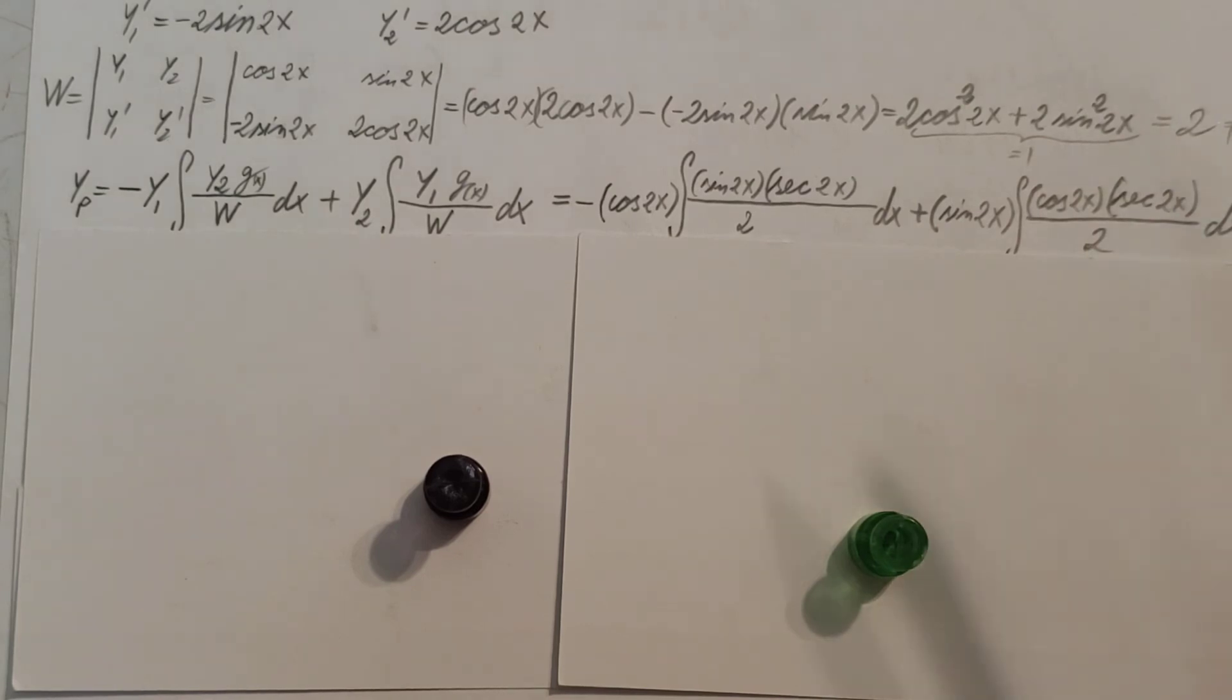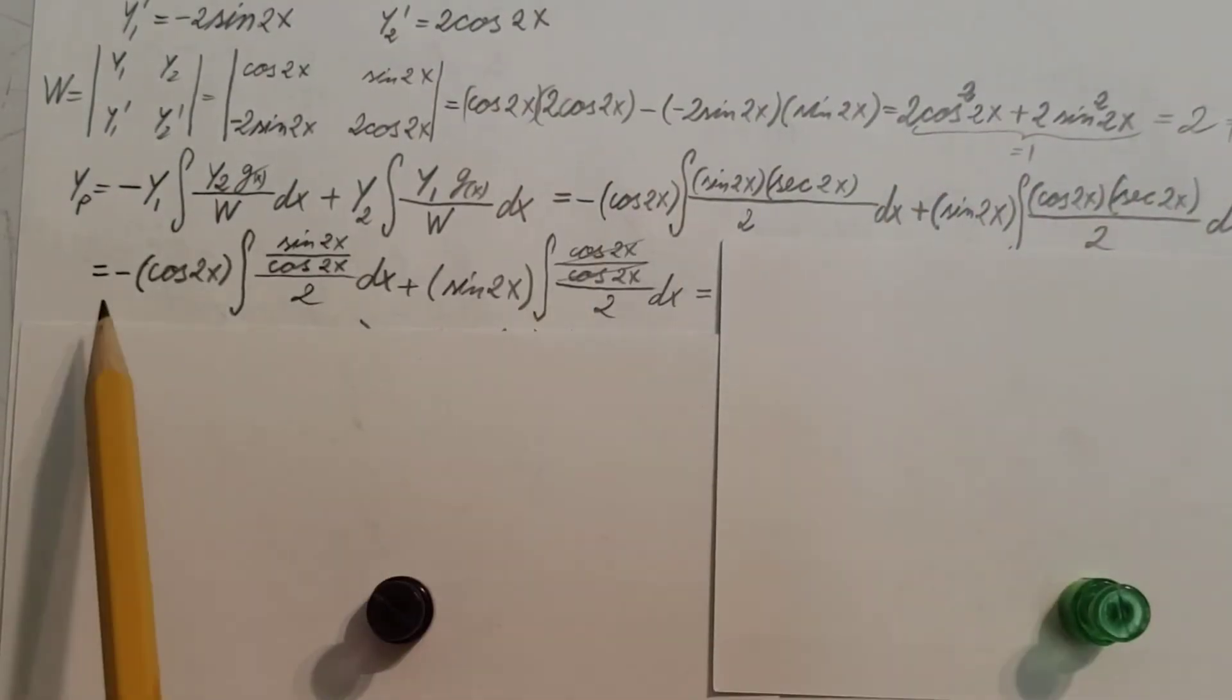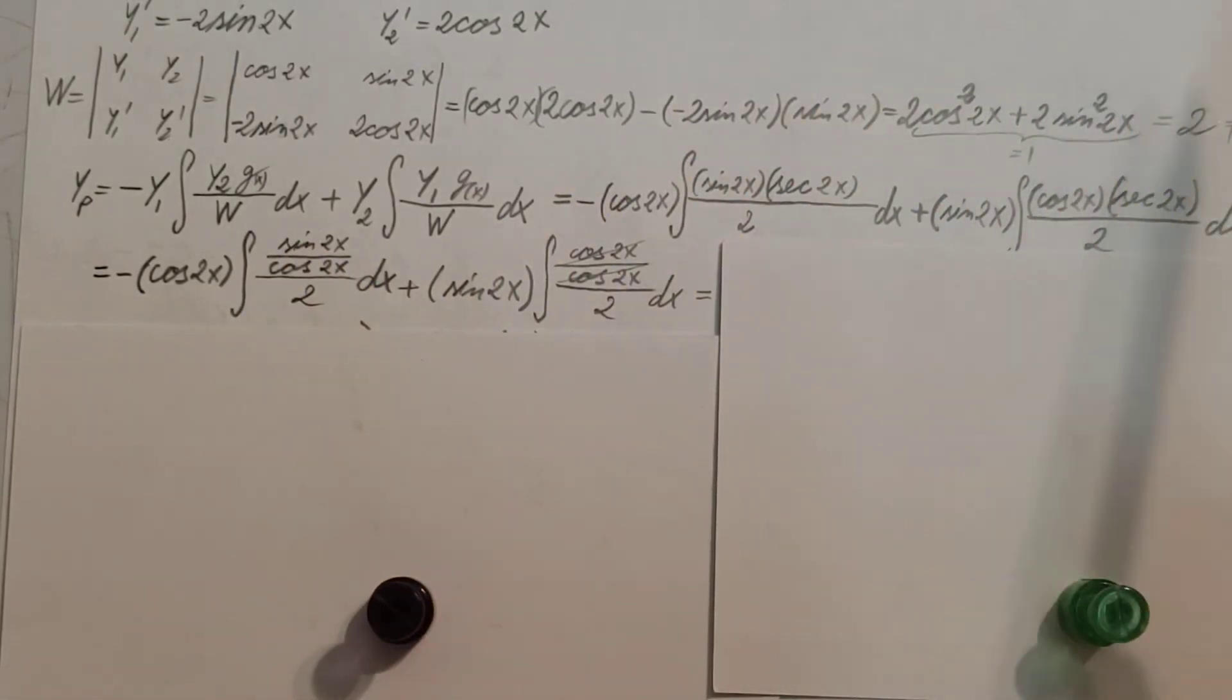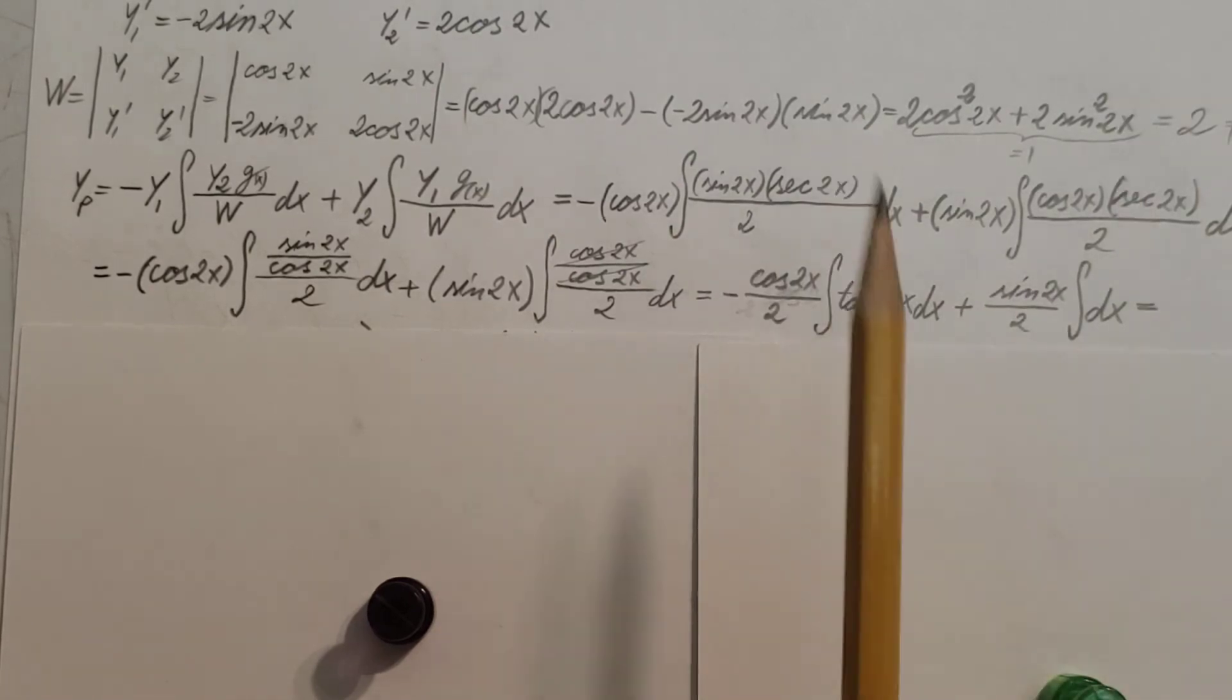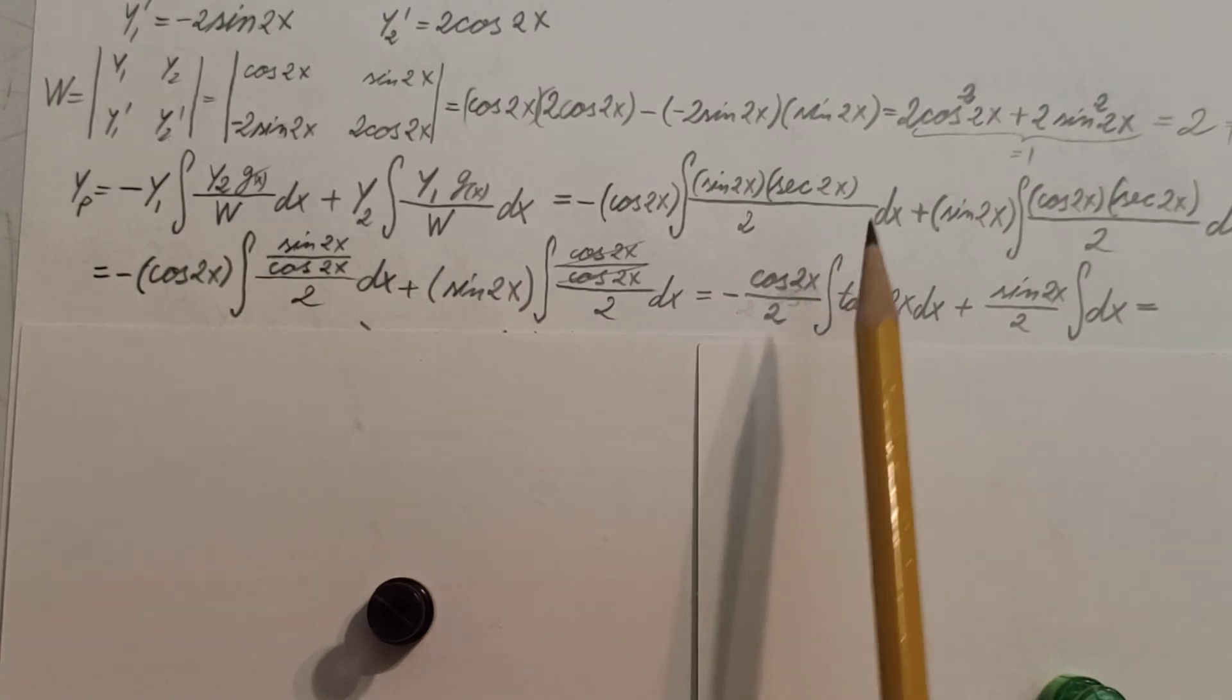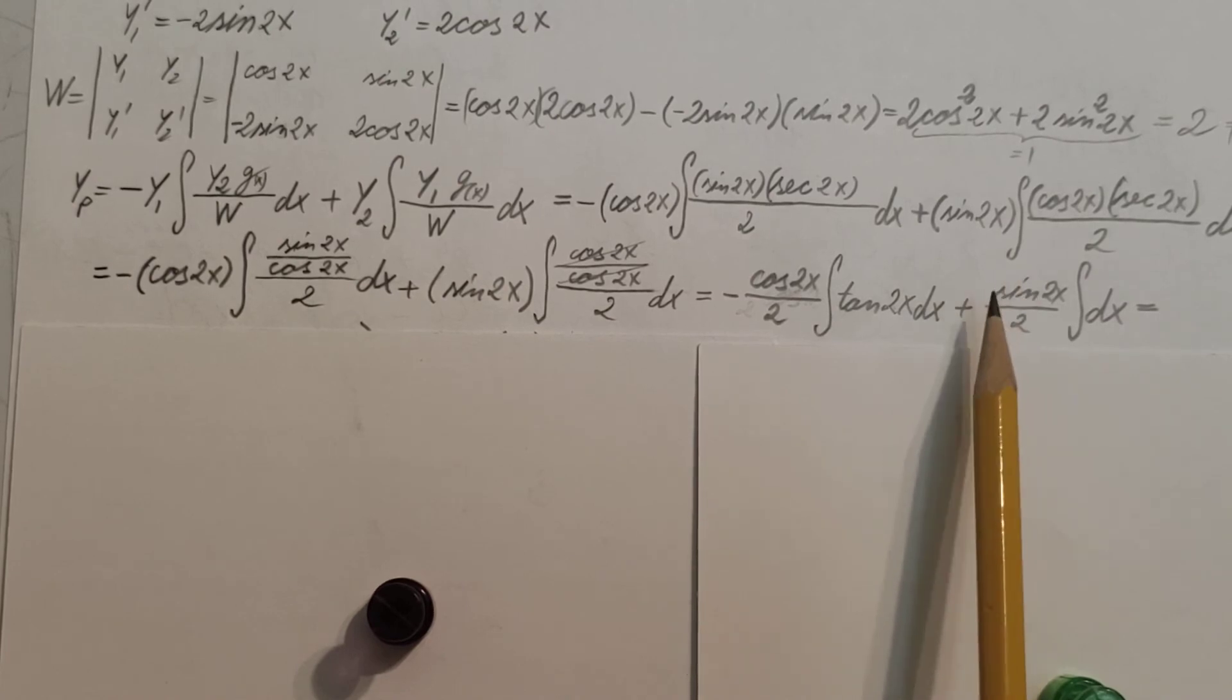Let's go ahead, we're going to have to do a bunch of simplification and then solve these two integrals. That's what you see happening here. I simplify—I'm going to go ahead and use what we wrote up there: sec(2x) = 1/cos(2x). So that's going to help me reduce and simplify. And now we're getting to this form: -cos(2x)/2 times the integral of tan(2x) dx, plus sin(2x)/2 times the integral of just simply dx.